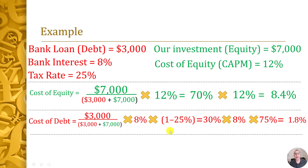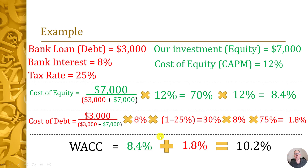Now we can calculate the WACC: 8.4% + 1.8% = 10.2%. With most companies, equity is much more expensive than debt — 12% versus 8%, and with the tax deduction debt effectively costs 6%. So debt is roughly half the price of equity. Why not fund the entire business on debt?